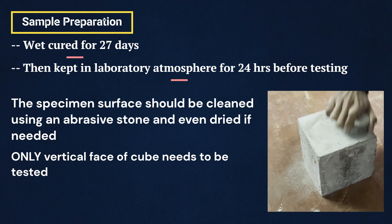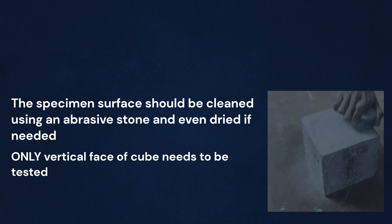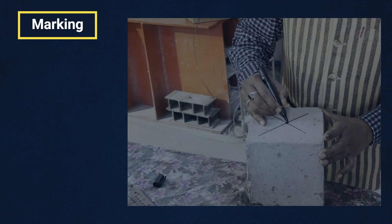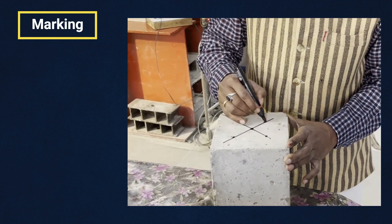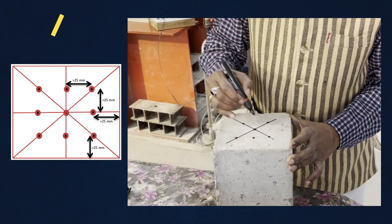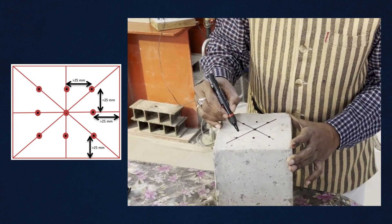We will only test the vertical face of the specimen. Step 2 Marking: Draw lines along the two diagonals of the specimen. Mark at least nine points of impact as shown in the adjoining figure.